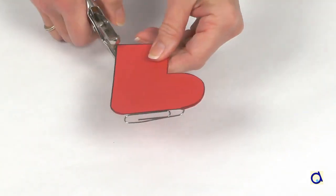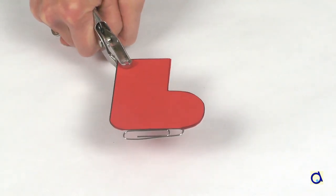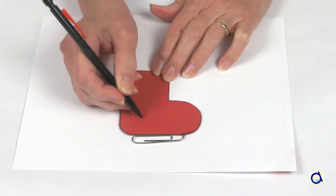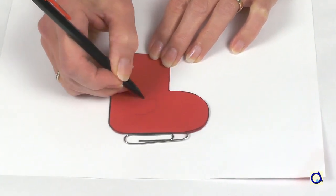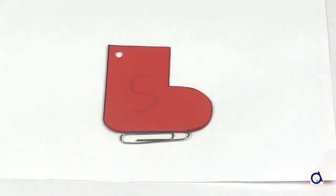Make a hole at the top of the skate to be able to pass a ribbon later. You could customize several skates with the initials of each member of your family for example. Start by drawing the letter in pencil.